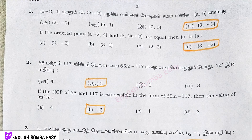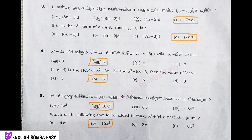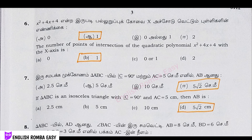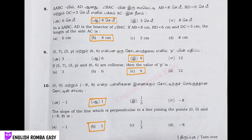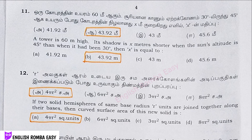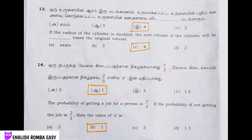Question number 1 is correct option D. Second is B. Third is D. Fourth is B. Fifth is B. Sixth is B. Seventh is D. Eighth is B. Ninth is C. Tenth is B. Eleventh is B. Twelfth is A. Thirteenth is C. And fourteenth is option B.